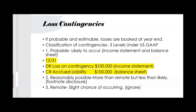There are three classifications for contingent losses. If it's probable — likely to occur — you must recognize the loss on the income statement and the liability on the balance sheet. If it's only reasonably possible — more than remote but less than likely — just a footnote disclosure is required; no journal entry. If it's only a remote chance, you ignore it completely.